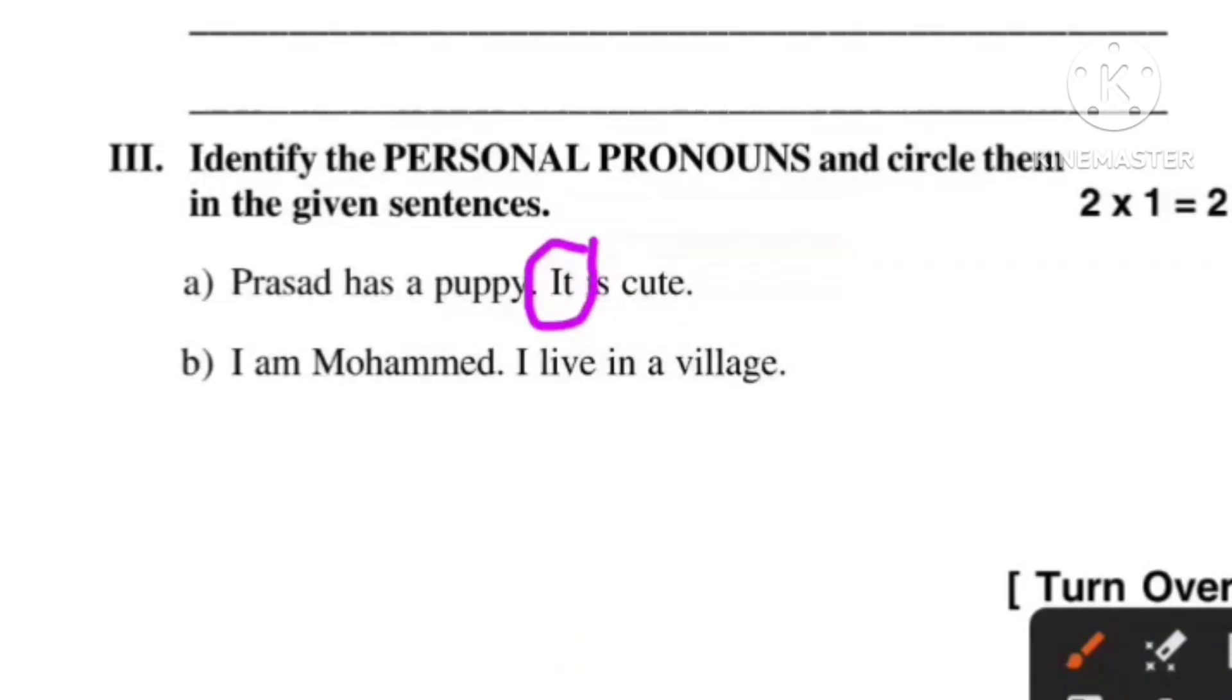B: I am Mohammed. I live in a village. This sentence has 'I' and 'I' as the personal pronouns. The second sentence has 'I'.